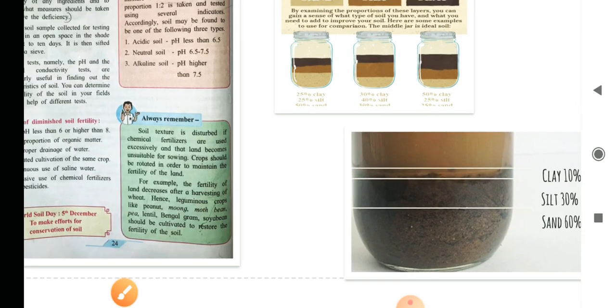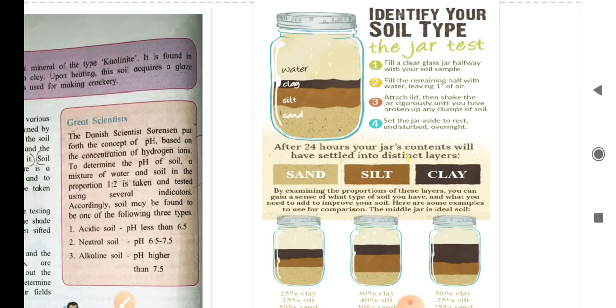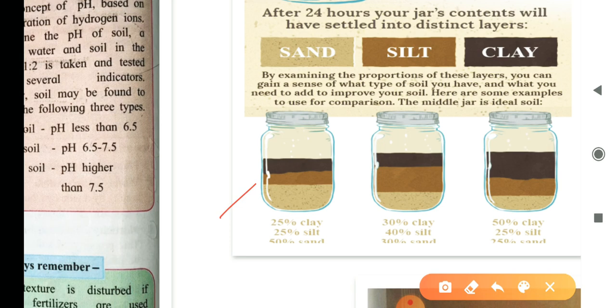Now, in the slide here, you can see the soil testing methods here. Identify the soil type, the jar test. Here they have filled this jar with the soil sample and left it after 24 hours. It is left undisturbed and you can see that the jars contents have settled down into distinct layers. You can see in the various sand type, the percentage in the first jar is 25% clay, 25% silt, 50% sand. Second one is 30% clay, 40% silt and 30% sand. Third one is 50% clay, 25% silt and 25% sand. In this way, we can test the soil.